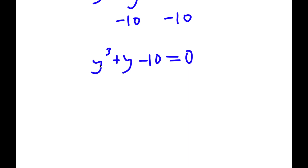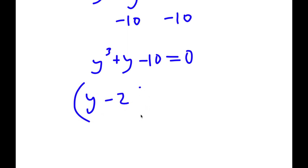Trying 2: 2 to the power of 3 is 8, 8 plus 2 is 10, 10 minus 10 is 0. So 2 is going to work, meaning a factor of this is going to be y minus 2. This is a factor of y to the power of 3 plus y minus 10.